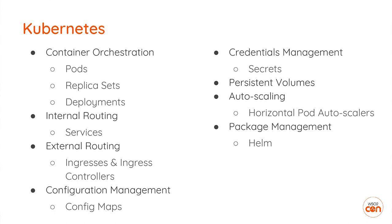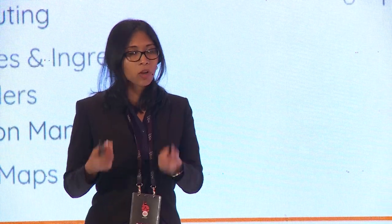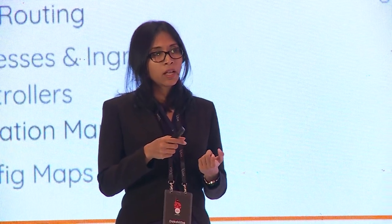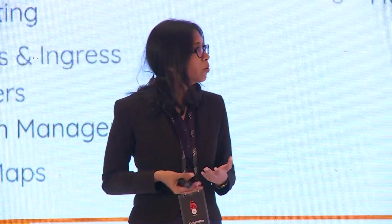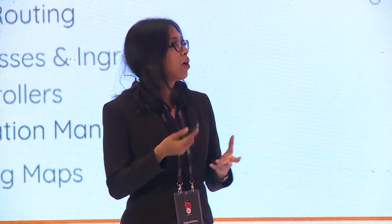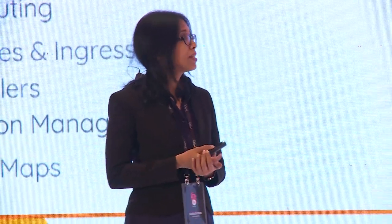For container orchestration you can use pods — a pod is considered the smallest unit in Kubernetes. A pod will contain one or more containers, usually two. Pods can be replicated using replica sets, and you can roll out changes using deployments. For internal routing you can use the services resource, and for external routing you can use ingresses and ingress controllers.